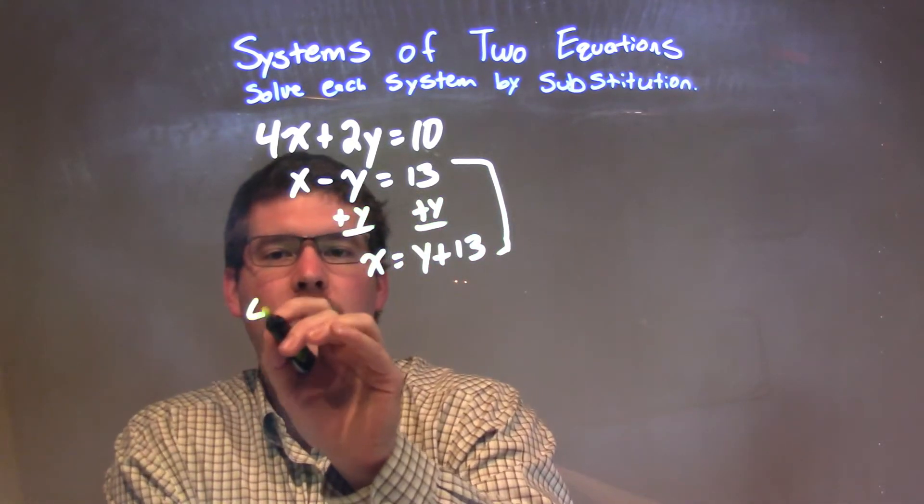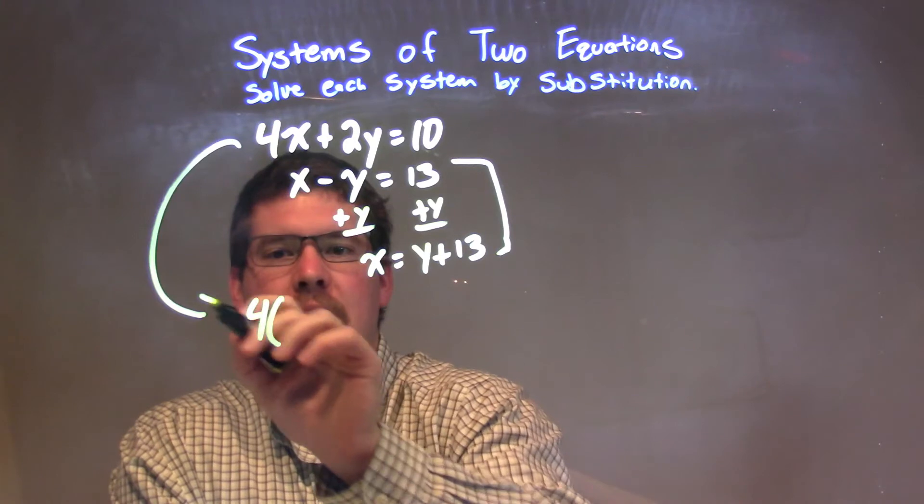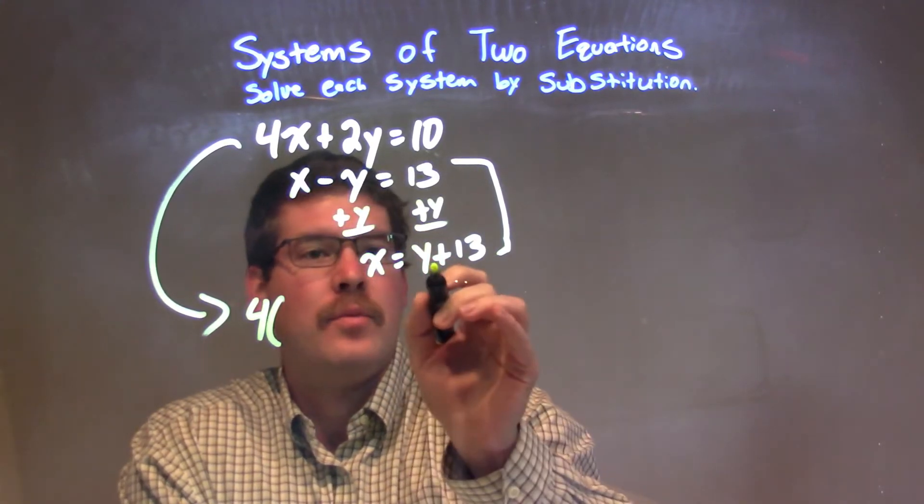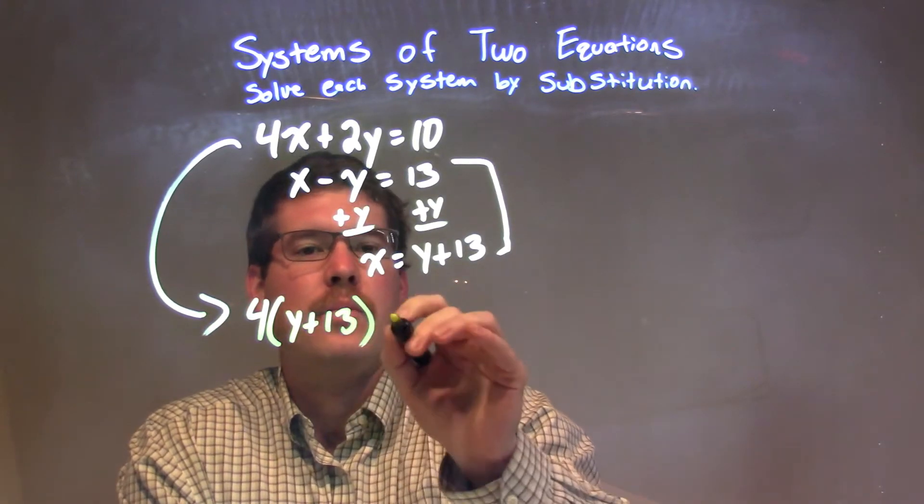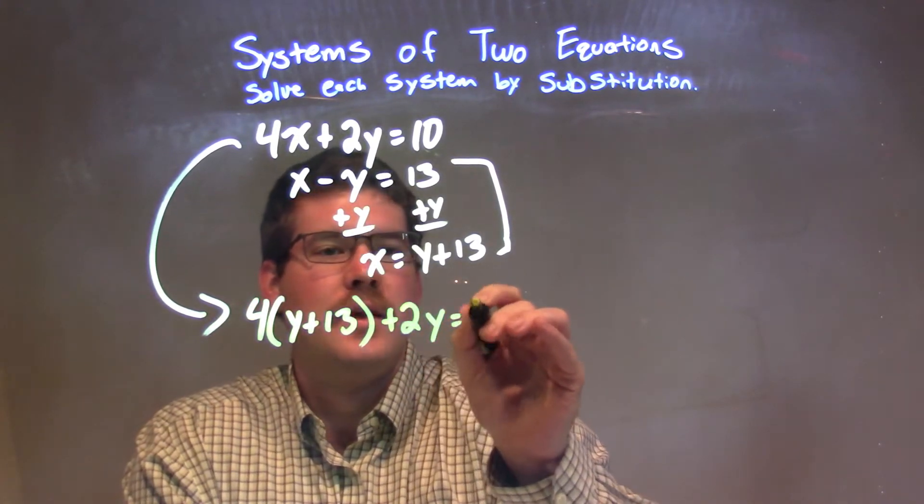So we have four times, well instead of x, I'm going to put y plus 13 right there, plus 2y equals 10.